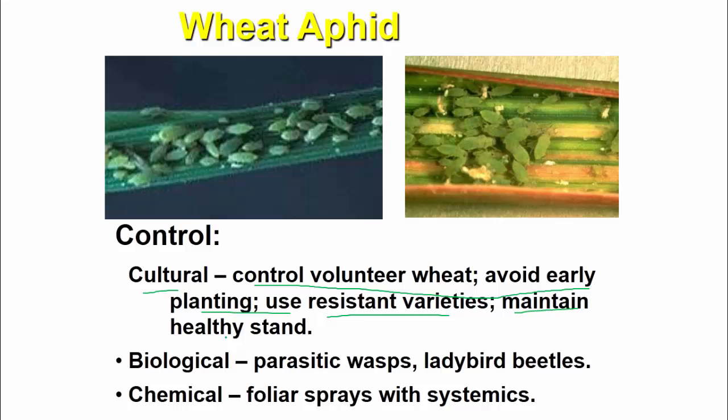For control of Russian wheat aphid: cultural control includes controlling volunteer wheat, avoiding early planting, using resistance varieties, and maintaining a healthy stand. Biological control uses parasitic wasps and ladybird beetles. Chemical control includes foliar spray with systemic pesticides.